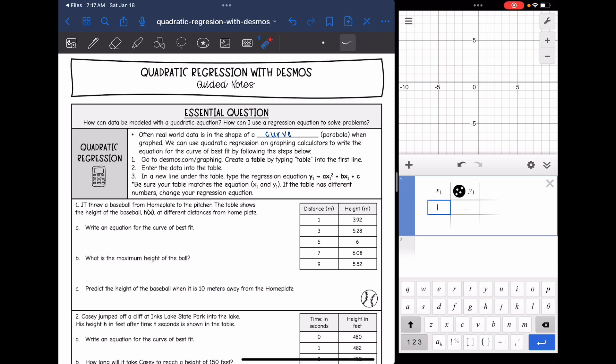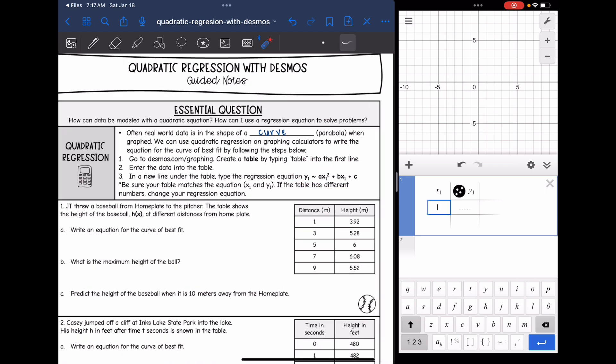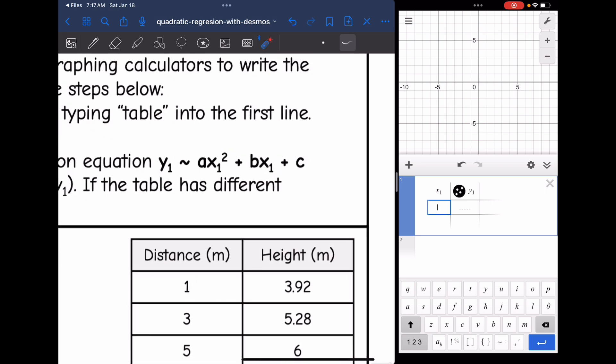Then we will input our data into that table. And then in a new line under the table, we will type the regression equation, which is basically the standard form of a quadratic, except we will use x1 for our x's in the equation and y1 for the y. Make sure that those numbers match the table. As you can see, my table over here has x1 and y1, so you want to make sure those numbers match.